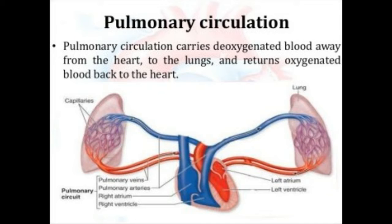What is pulmonary circulation? Pulmonary involves the lungs. When impure blood enters the heart, from the heart the impure blood is supplied to the lungs. Again from the lungs it comes back to the heart. This cyclic event — heart to lungs and lungs to heart — is called pulmonary circulation.